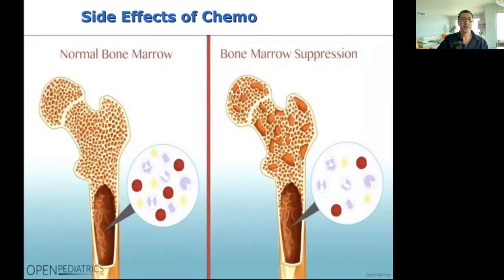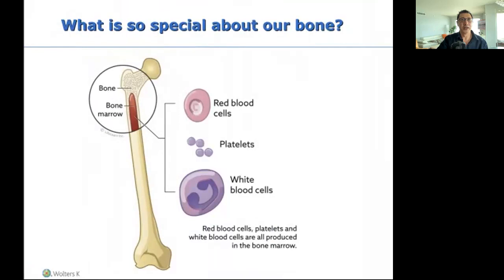Bone marrow suppression is the most deadly side effect — who cares about hair loss or brittle skin, but bone marrow suppression changes the game. Our bone marrow produces red blood cells, platelets, and white blood cells. When bone marrow is suppressed, it stops producing these — RBCs drop, platelets drop, WBCs drop. The patient is in serious trouble.